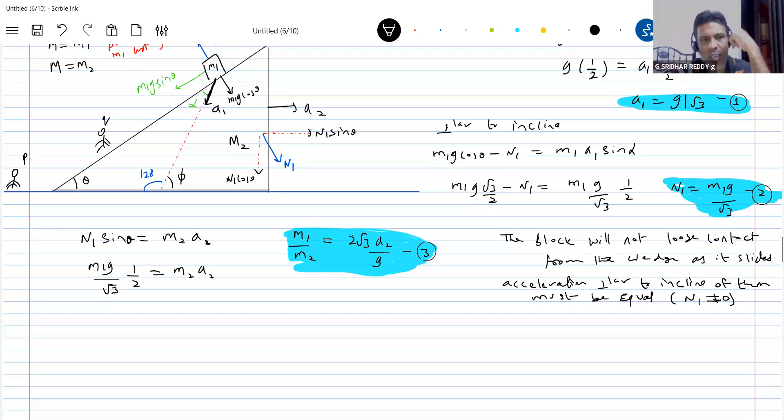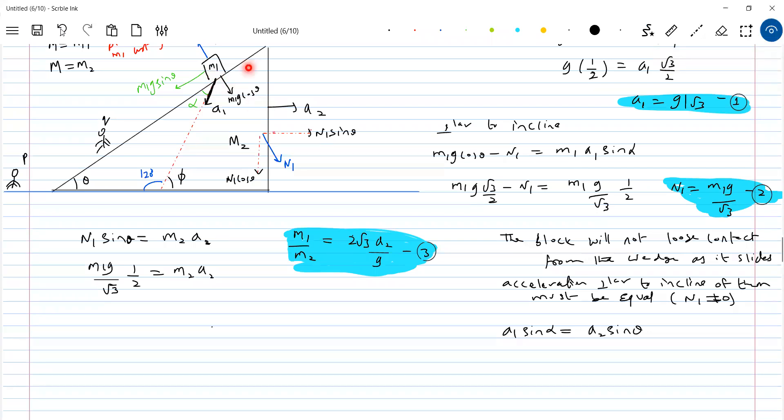A1 sine alpha should be equal to the constraint equation. Acceleration of the block is how much? Like this. There's A2, no? So here you have to take this as theta. So I'll write down the equation here. A1 sine alpha should be equal to A2 sine theta. Is it okay? From where this equation brought? What is the acceleration of the block? A1 like this. So perpendicular to incline, A1 sine alpha. This is A1. So how much perpendicular to incline? A1 sine alpha.